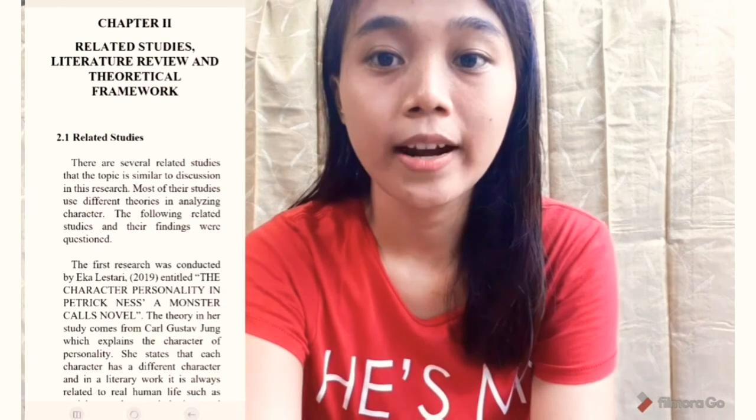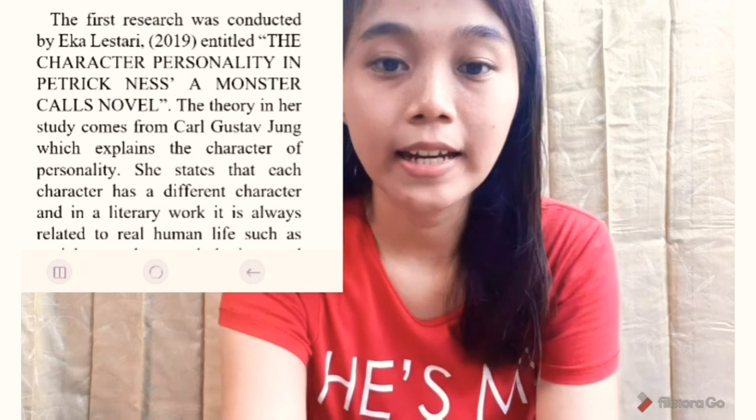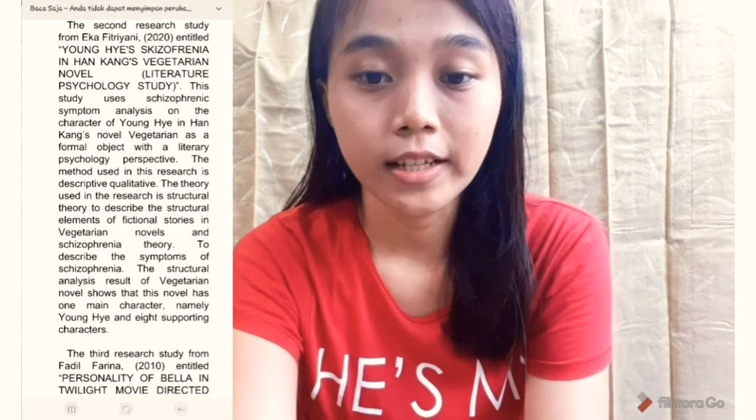Continuing to Chapter 2, there are several related studies with topics similar to the discussion in this research. First, research conducted by Eka Osari in 2019, titled The Character Personality in Patrick Ness' A Monster Call novel; she used Jung's theory and a qualitative method. Secondly, research conducted by Eka Fitriani in 2020, titled Jung Has Schizophrenia in Hong Kong's Novel; she used a descriptive qualitative method. Thirdly, research conducted by Fadhil Farina in 2010, titled A Personality of Bella in Twilight Movie; she used a qualitative method.